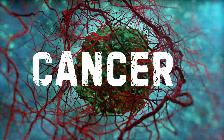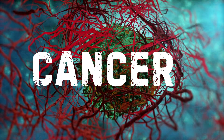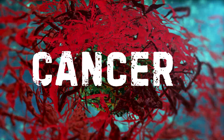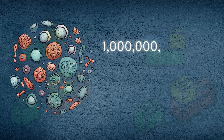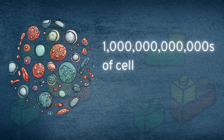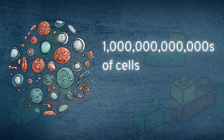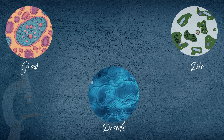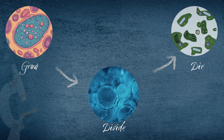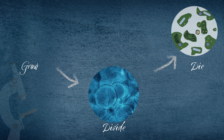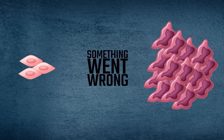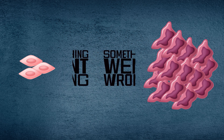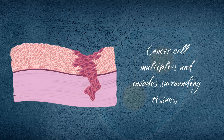Cancer affects millions of people worldwide, but what exactly is it? Our bodies are made of trillions of tiny building blocks called cells. These cells normally grow, divide when needed, and die when they're old or damaged. Cancer happens when something goes wrong in this cycle — cells start growing and dividing uncontrollably, forming abnormal cells called cancer cells.